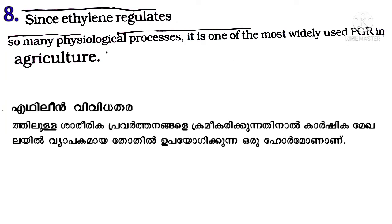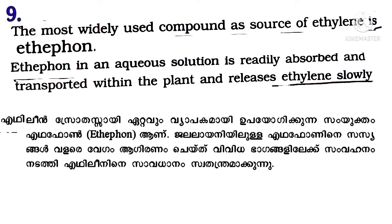Ethylene regulates so many physiological processes that it is one of the most widely used PGRs in agriculture. Ethephon, an aqua solution, is readily absorbed and transported within the plant and releases ethylene slowly.